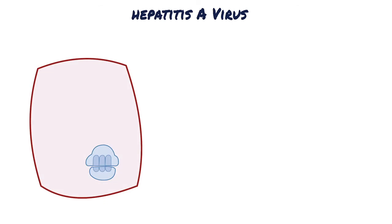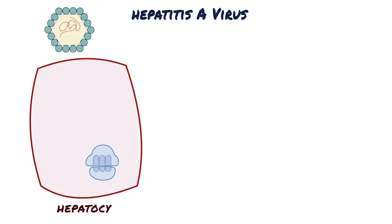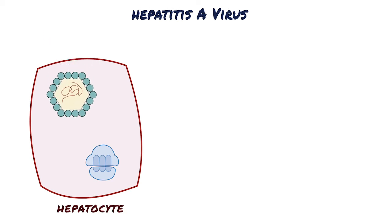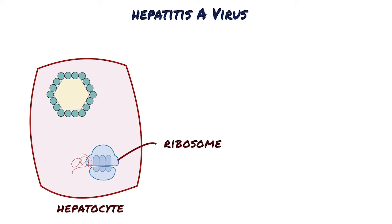In the liver, the Hepatitis A virus binds to receptors on hepatocytes and Kupffer cells and enters by endocytosis. Inside the cell, viral RNA is released from its protein coat. Then it binds to the host ribosomes, which translate it into a protein that will be used to create a capsid and an RNA polymerase to make more copies of the viral RNA.